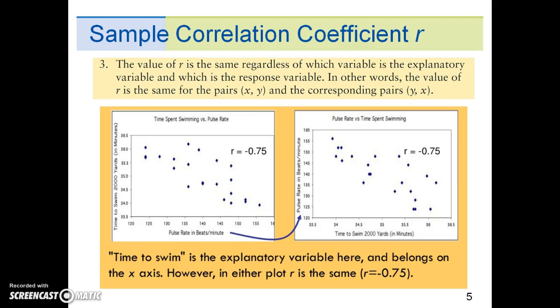These graphs show the relationship between time spent swimming and pulse rate. The graph on the left shows pulse rate on the x-axis and time to swim on the y-axis. The graph on the right has the variables switched, so time to swim is on the x-axis and pulse rate is on the y-axis.